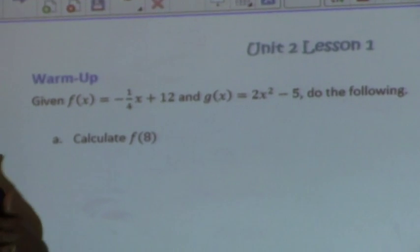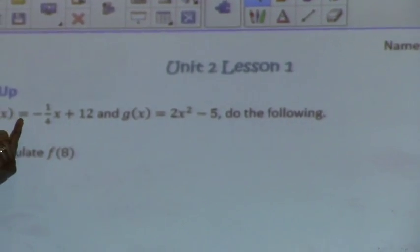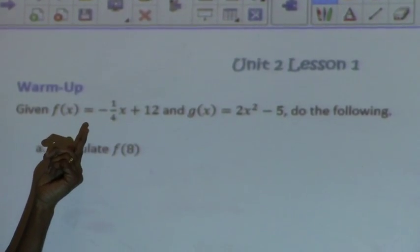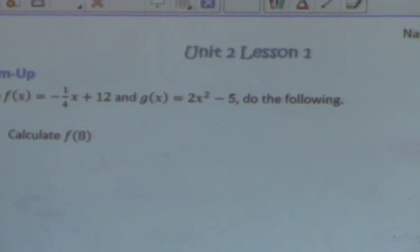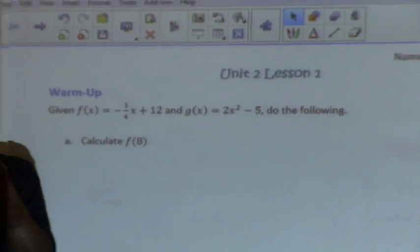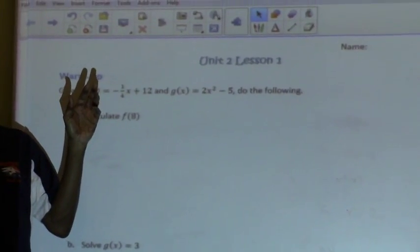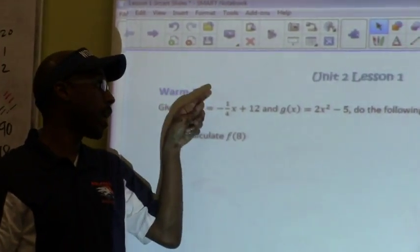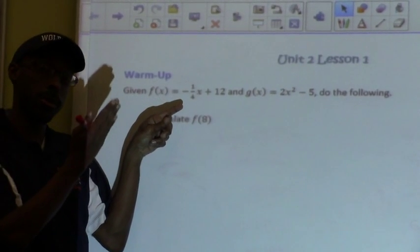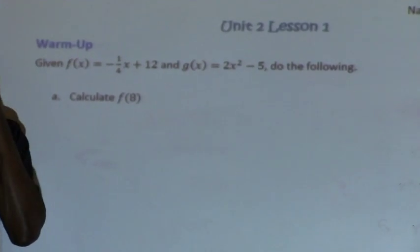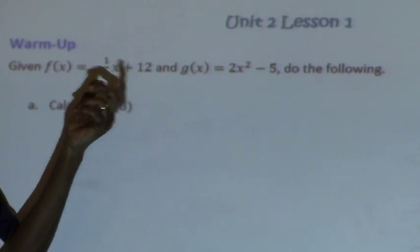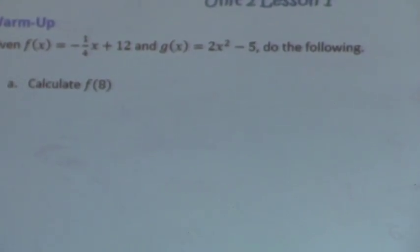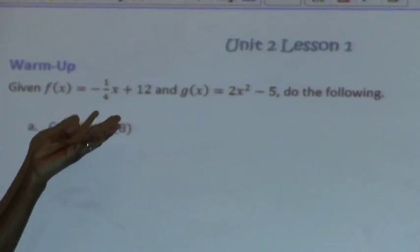Put in Y equals. F of X is a new name for Y equals. Y equals negative one-fourth. You've got to put negative on the outside parenthesis. One divided by four, close parenthesis. The parenthesis are above number two and three, or they're above the, okay. Above who? Eight and nine? Above eight and nine. Negative, open parenthesis. One divided by four, close parenthesis. Then you hit X. X is to the right of green button. Then plus twelve.